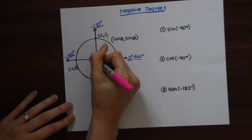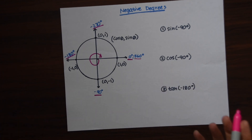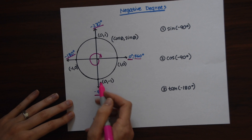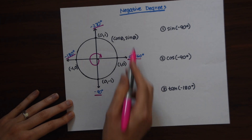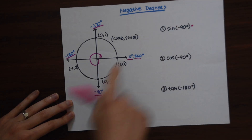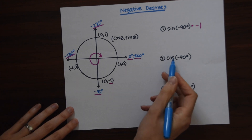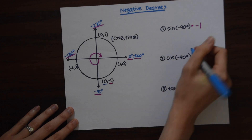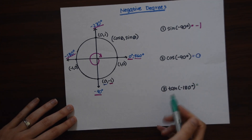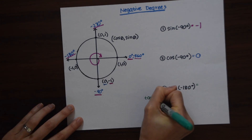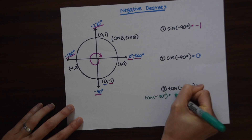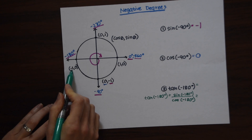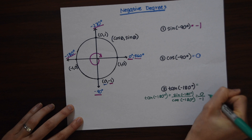Notice negative degrees go clockwise. To solve these problems, we do the same thing as before — we just look at the coordinate points. For sine of negative 90, we go down to negative 90 degrees, look at the y-coordinate, and it's equal to negative 1. For cosine of negative 90 degrees, we look at the x-coordinate, which is 0. For tan of negative 180, using sine over cosine: 0 divided by negative 1 gives us 0.